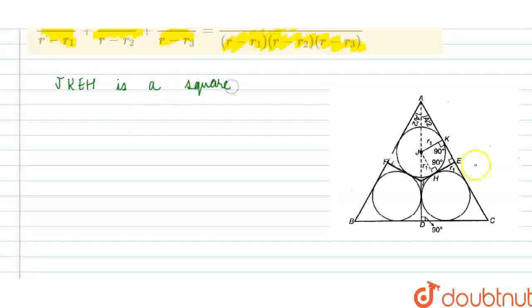Why? Because all the angles are 90 degrees - this is 90, this is 90, this is 90, so this must be obviously 90. Therefore, this is a square and we can say that HE is equal to JK.